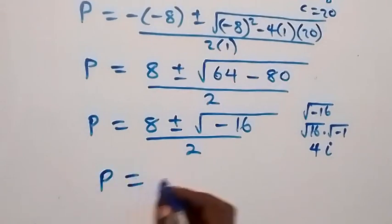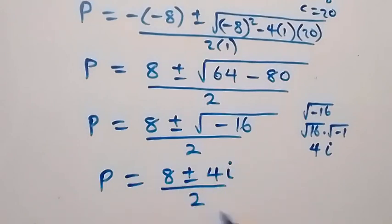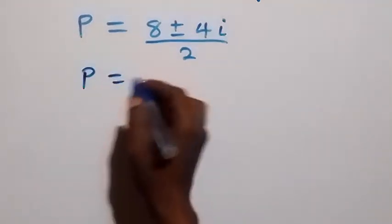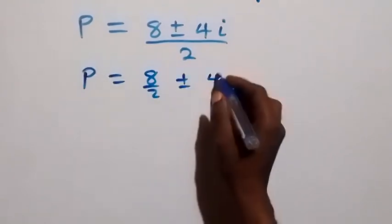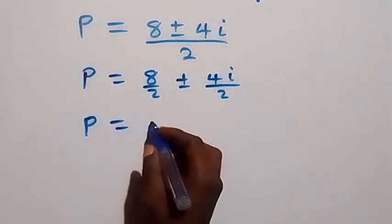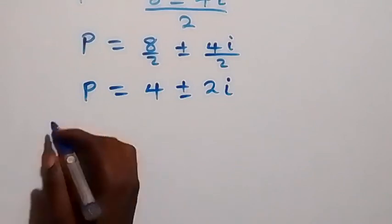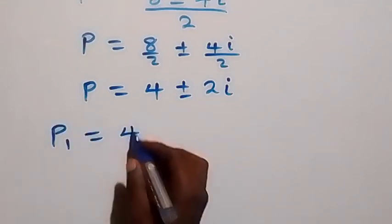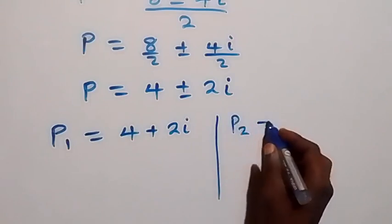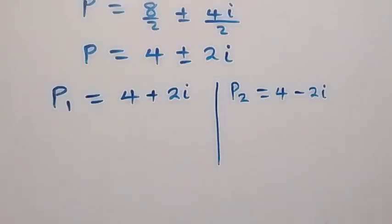So we now have p equals 8 plus or minus 4i, all over 2. Separating the fraction gives p equals 8 over 2 plus or minus 4i over 2, which simplifies to p equals 4 plus or minus 2i. So the two possible values are: p1 equals 4 plus 2i, and p2 equals 4 minus 2i.